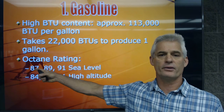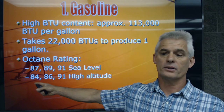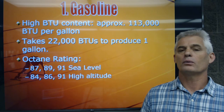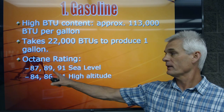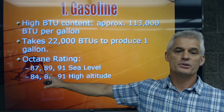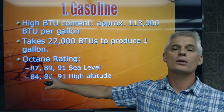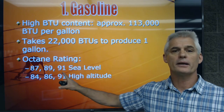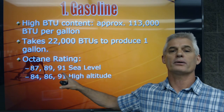Our octane ratings at sea level are 87, 89, and 91. In the Rockies in Colorado, it's 84, 86, and 91, because we don't need as high an octane when there's less oxygen at altitude. Everybody buys 87 because it's cheapest. Almost every passenger car really should be running 89 octane — cars will run a little better and get a little more performance. You don't need 91 unless you have higher compression, really high load, high heat, or things like that.